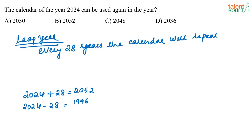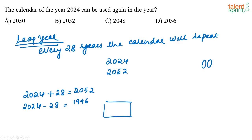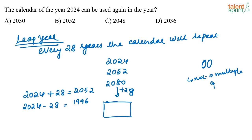One thing to keep in mind: for this question, we know 2024 and 2052 have the same calendar. After 2052, adding 28 again gives 2080, which will also have the same calendar. However, I cannot say that again plus 28 — whichever year comes — will also have the same calendar. When doing this calculation and repeatedly adding 28, if in between there is a year which ends with 00 and is not a multiple of 400, the chain will break.